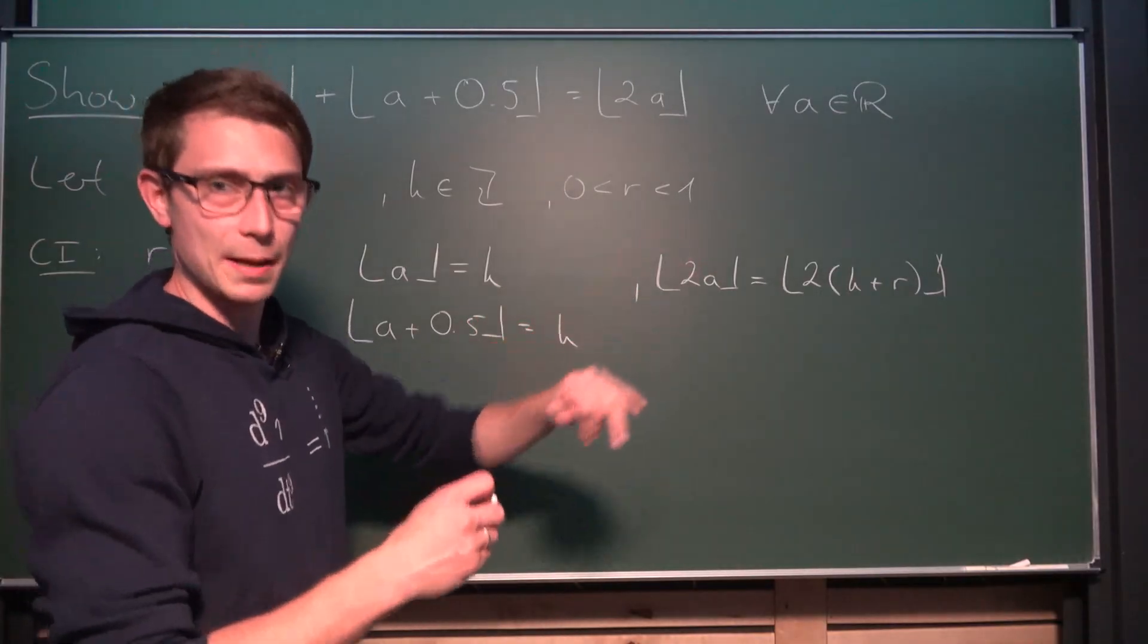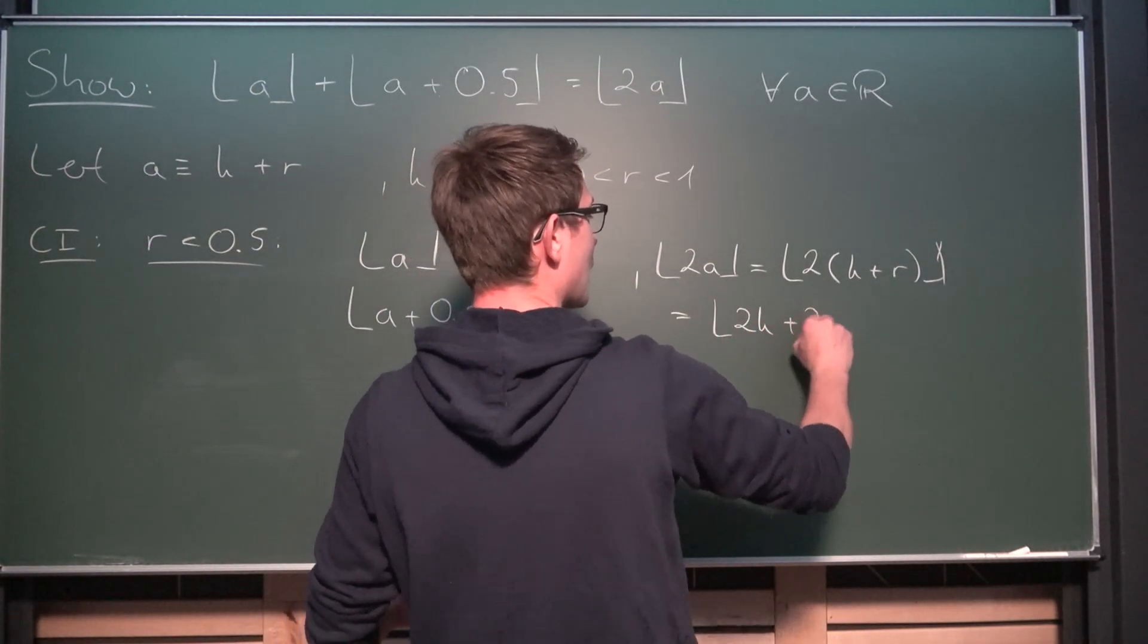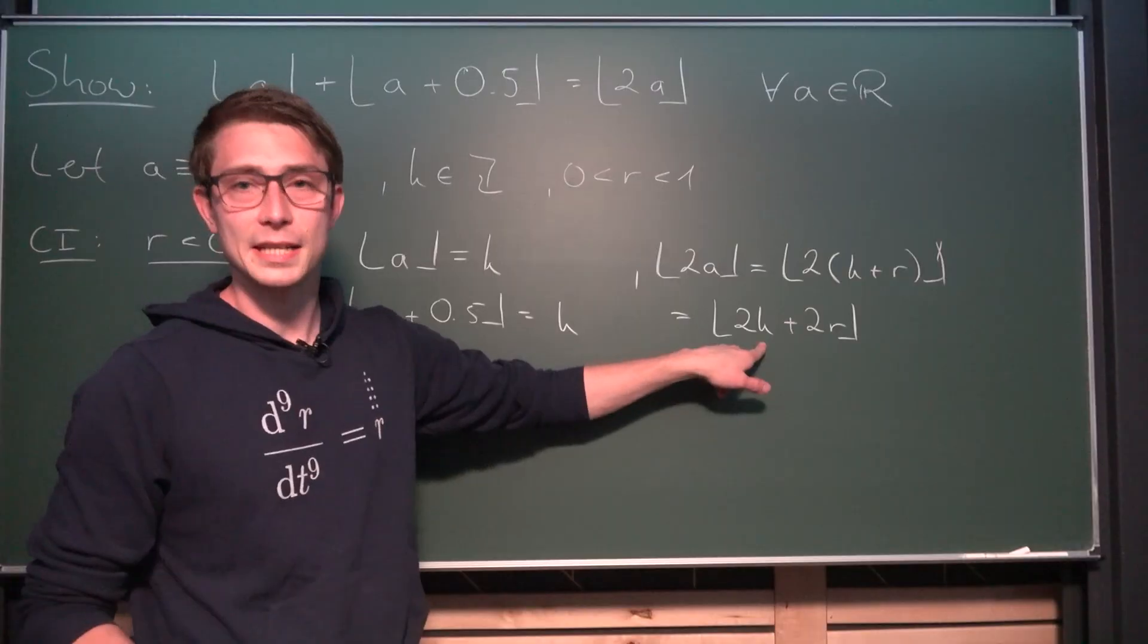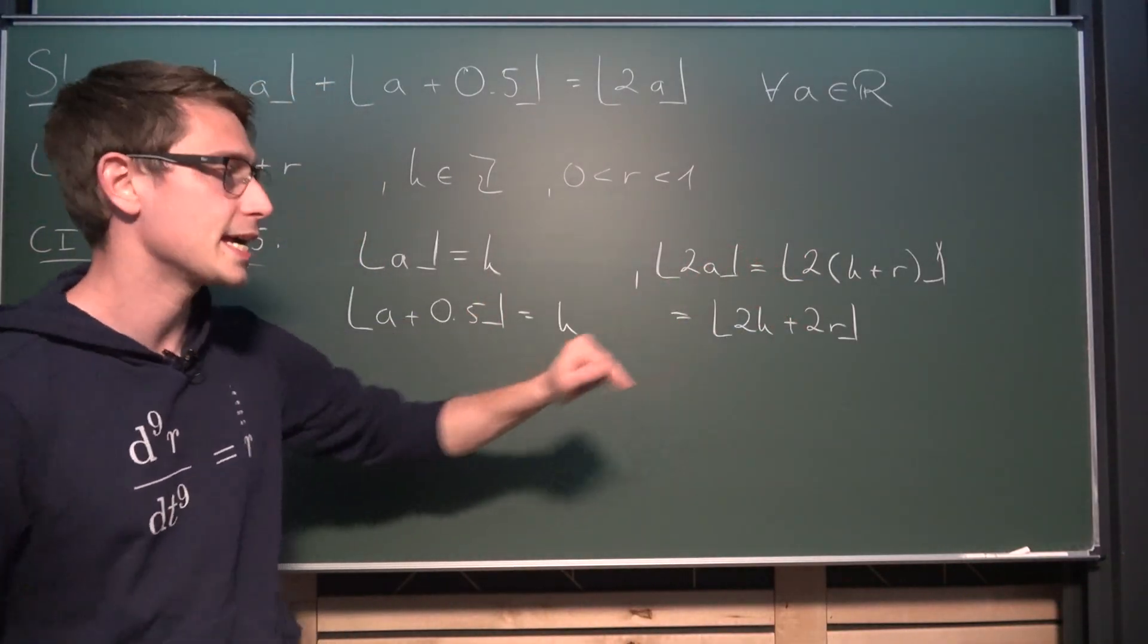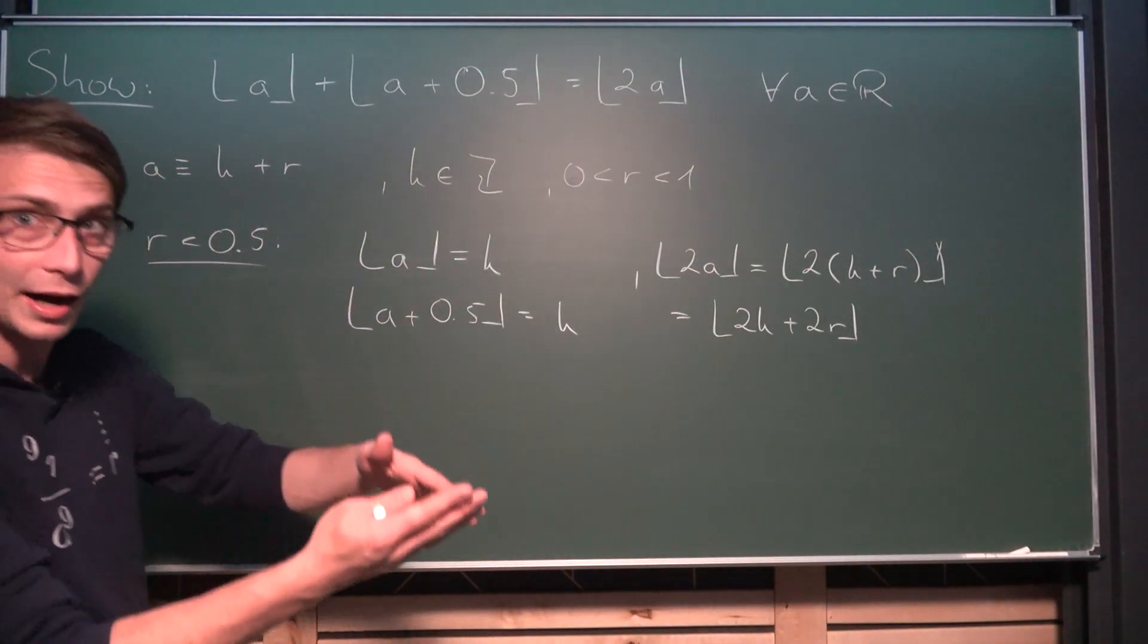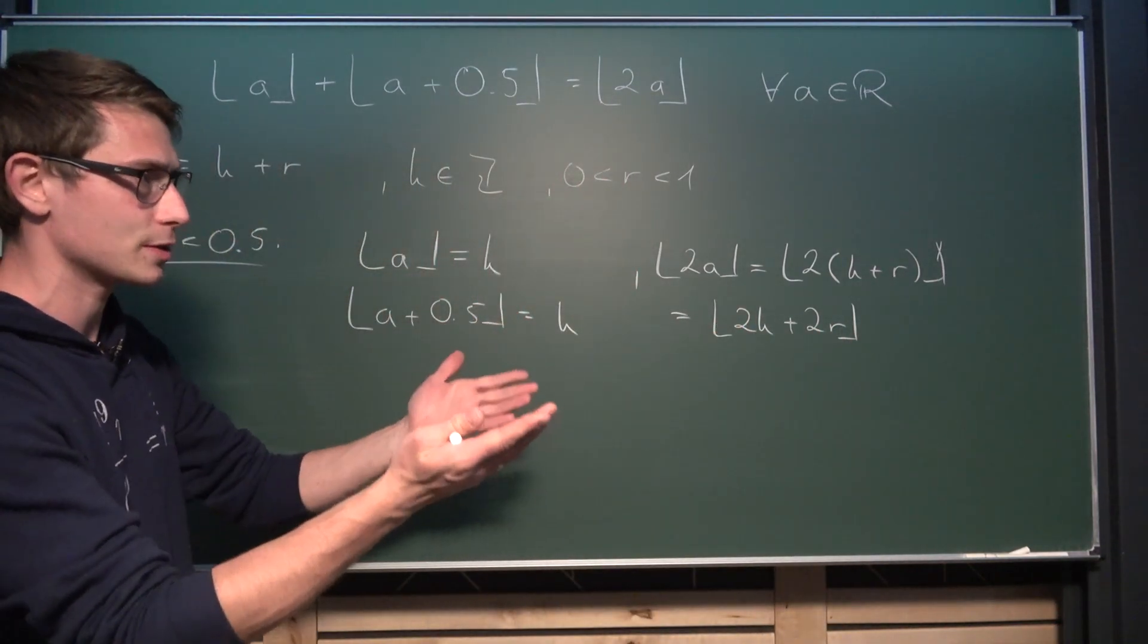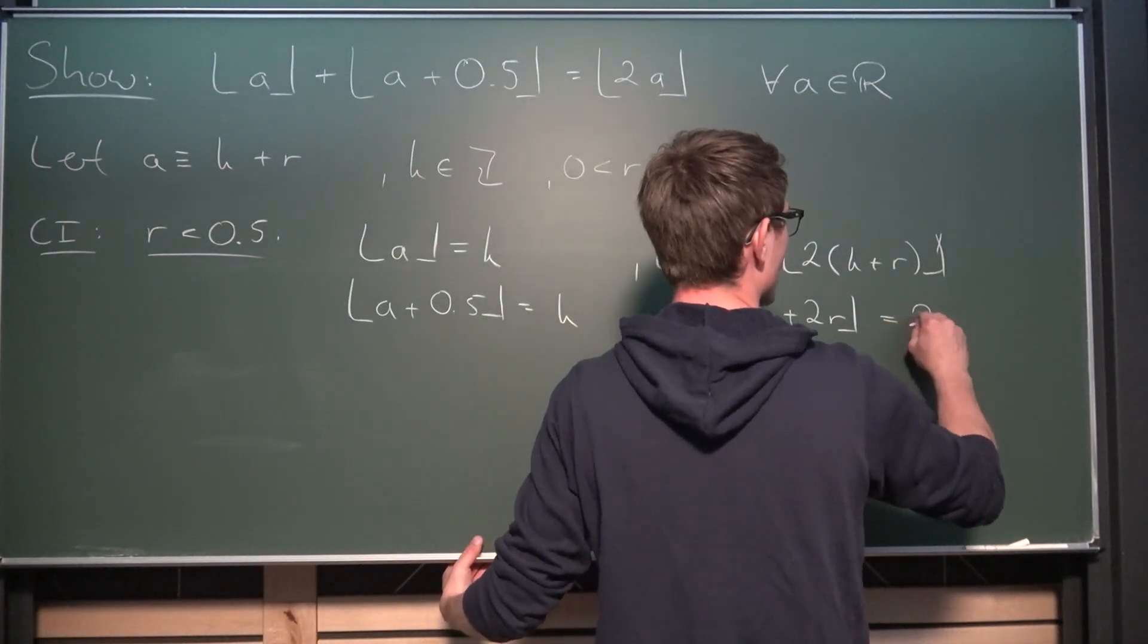Now if we have 2 times k plus r, this right here is the same as the floor of 2 times k plus 2 times r. And here's where our case magic comes in clutch because k is an integer. So we would have 2 times 3 which is 6. This would just round down to 2 times k. Now what about 2 times r? Since r is less than 0.5, we are in the vicinity of for example 2 times 0.4 which is 0.8 once again. Meaning we are simply going to round down to 2k overall.